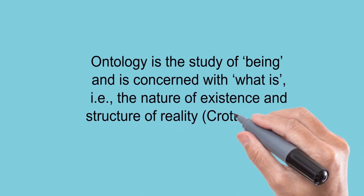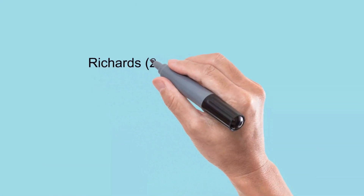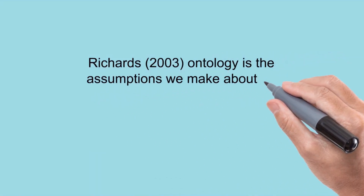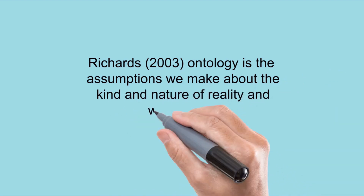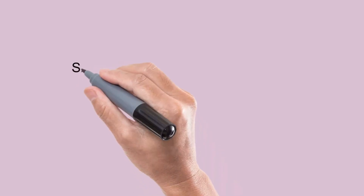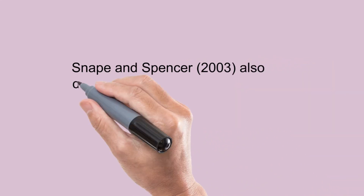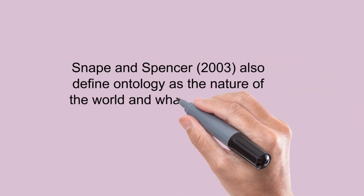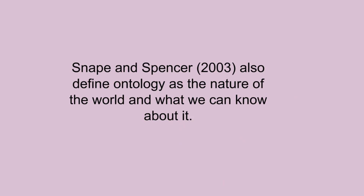Bridges in 2003 states that ontology is the assumptions we make about the kind and nature of reality and what exists. Snape and Spencer in 2003 also define ontology as the nature of the world and what we can know about it.